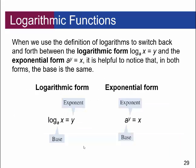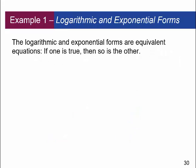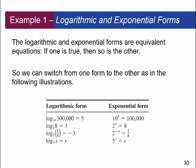We use this definition to switch between logarithmic form — log base a of x equals y — and exponential form — a to the y equals x. In both forms the base is the same. The logarithmic and exponential forms are equivalent equations; if one is true then so is the other. For example, log base 10 of 100,000 equals 5 is equivalent to 10 to the fifth power equals 100,000. Similarly, log base 5 of s equals r means 5 to the r equals s.